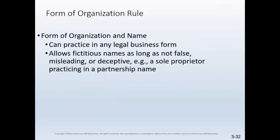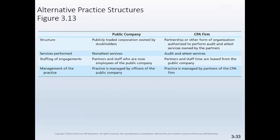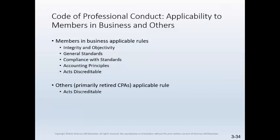The Code of Professional Conduct allows CPAs to practice in any legal business form. This includes the ability to practice as professional corporations, limited liability partnerships or companies, partnerships, and sole proprietorships. Fictitious names are allowed as long as they are not false, misleading, or deceptive. This diagram illustrates the relatively new alternative practice structures discussed in Chapter 1. The Code does allow CPA firms to form various affiliations between firms that include these structures. In addition to applying to members in practice, the AICPA Code of Professional Conduct also is applicable to members in business and other members such as those who are retired or unemployed.